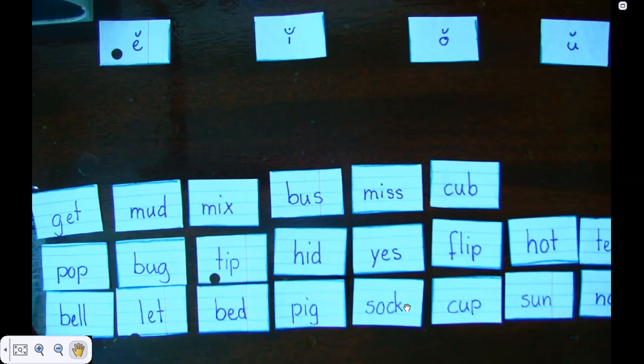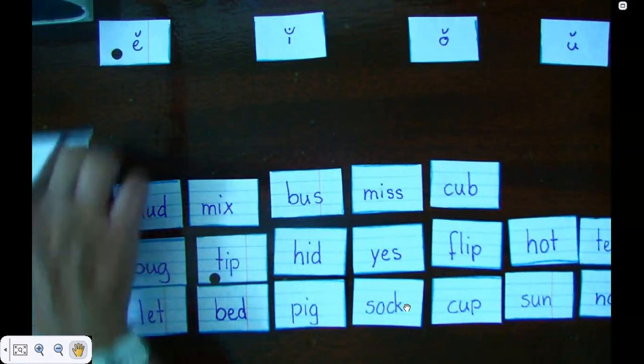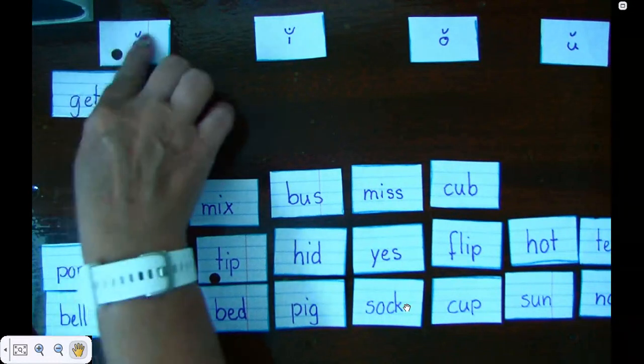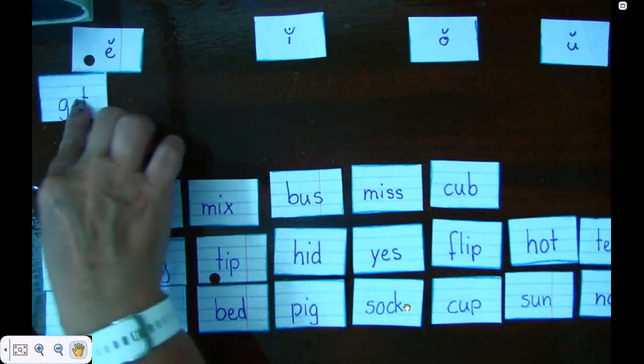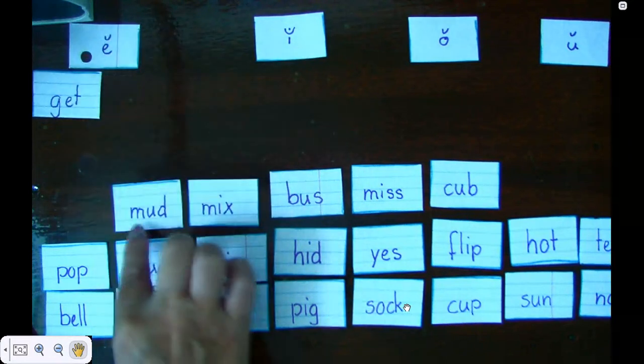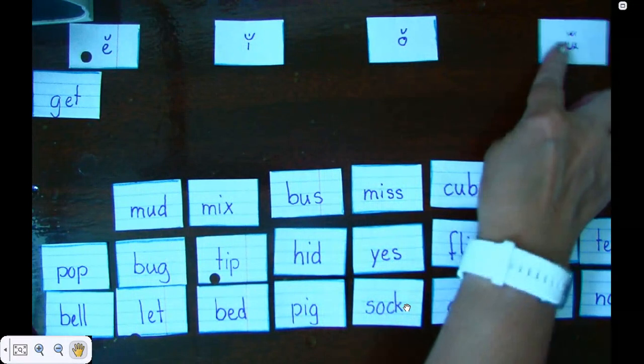Let's go ahead and get sorting. I have get, my vowel is the E, so it goes under the E column. Let me scoot these over a little bit. Then I have the word mud. Mud has a U, so it goes under the U column.